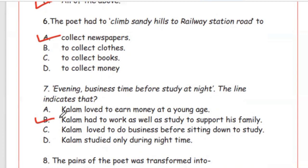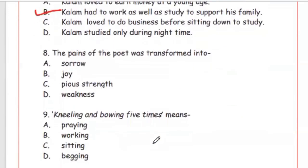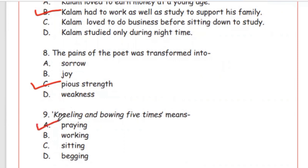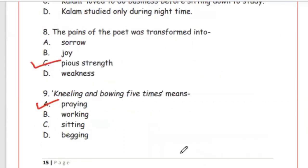Question 8: The pains of the poet were transformed into — we read in the poem 'transforming my pain into pious strength.' The answer is Option C. Question 9: Kneeling and bowing five times means Option A, praying — namaz ada karna.